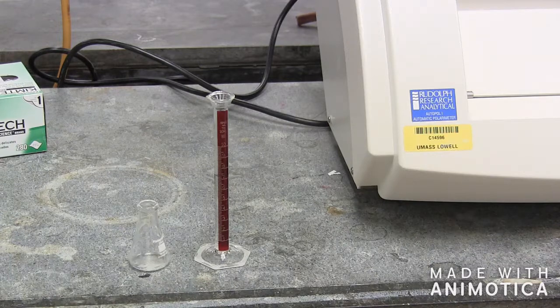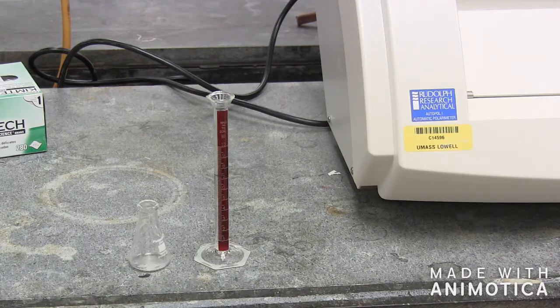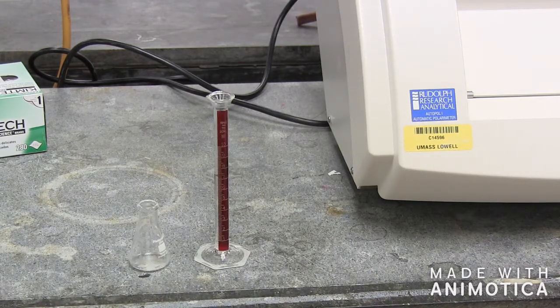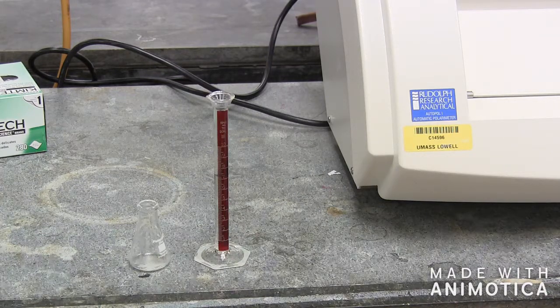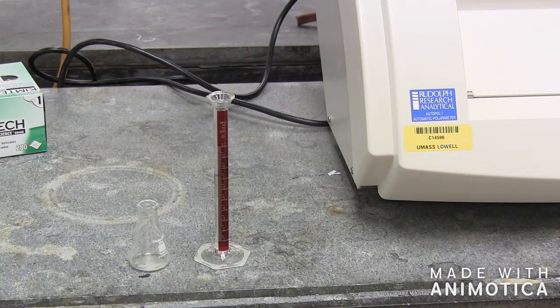Once you have isolated your compound, you are ready to measure its optical activity in the polarimeter. Dissolve the sample in 7 milliliters of solvent in a separate beaker and record the exact mass of your sample.